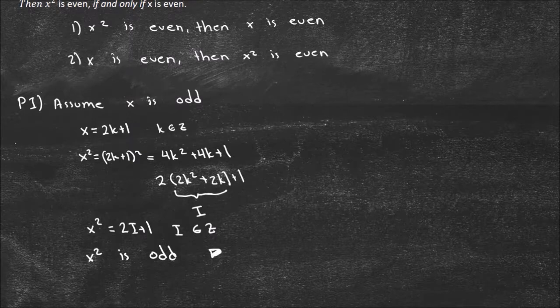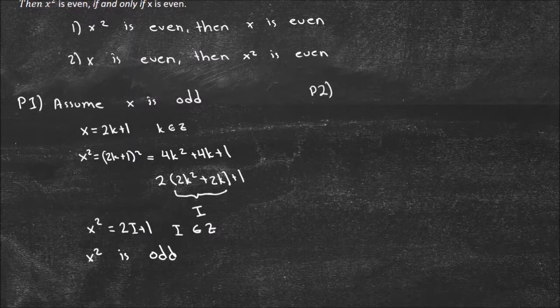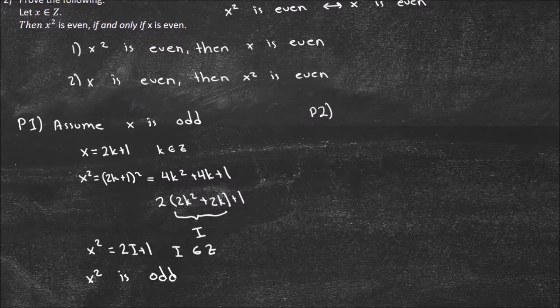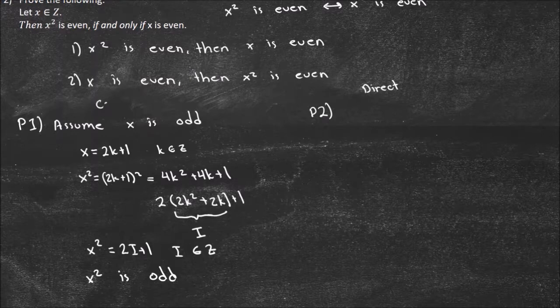So X squared is odd, and that concludes part 1. So part 1 is true. I wouldn't put the proof mark here yet because we haven't shown part 2 — the whole proof has to be true only if we can show part 2 as well. What we showed is: if X is odd, then X squared has to be odd, and that's proof by contraposition. So for part 2: if X is even, then X squared is even — and let's do this one by direct proof.